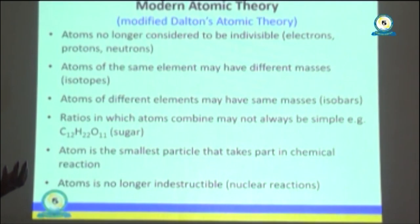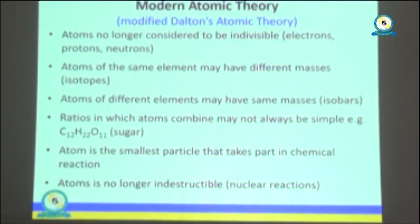Those were the new discoveries that modified the atomic theory. Atoms are no longer considered to be indivisible. Atoms of the same element may actually have different masses, and atoms of different elements may have the same mass — these are known as isobars. It was also discovered that ratios in which atoms combine may not always be in simple numbers. For example, sugar has 12 atoms of carbon, 22 atoms of hydrogen, and 11 atoms of oxygen — which is not a simple ratio. It was also discovered that an atom can be destroyed by, for example, nuclear reaction.